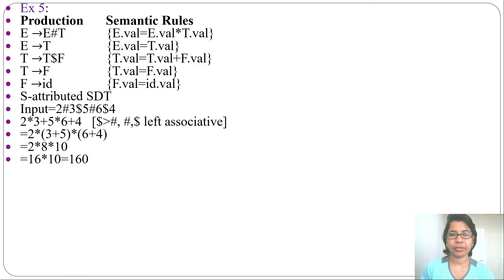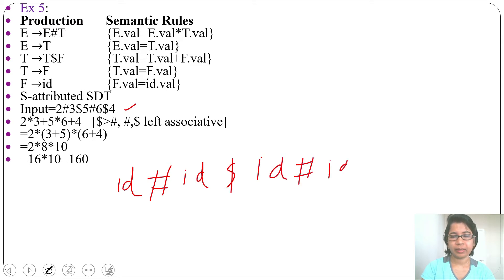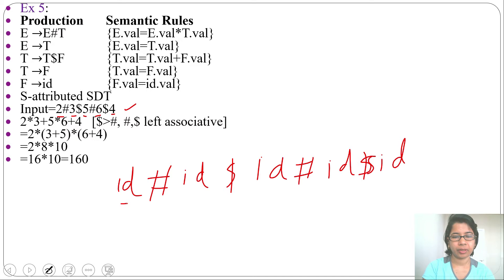Now let me construct the parse tree for this input: ID haars ID dollar ID haars ID dollar ID. There will be 5 identifiers — ID1, ID2, ID3, ID4, ID5 — corresponding to values 2, 3, 5, 6, and 4 respectively.